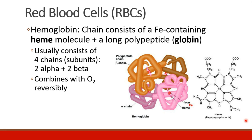Hemoglobin is a chain consisting of an iron-containing heme molecule, with a long polypeptide — the globin — folded around it. Usually a hemoglobin molecule consists of four different chains or subunits: two are the alpha type and two are the beta type. Each protein chain is folded around an iron molecule.